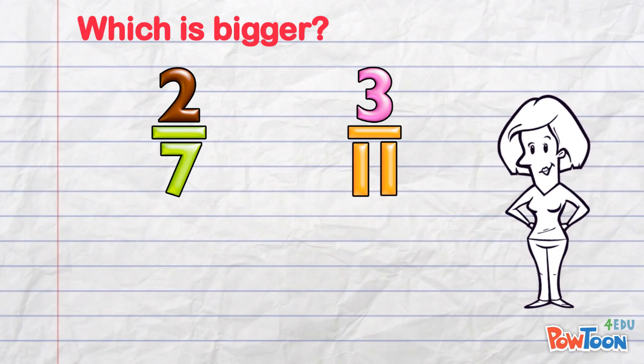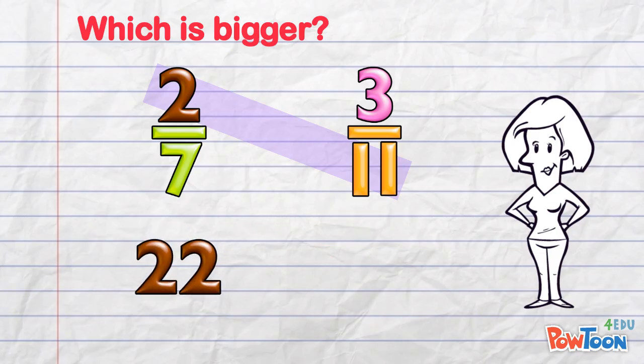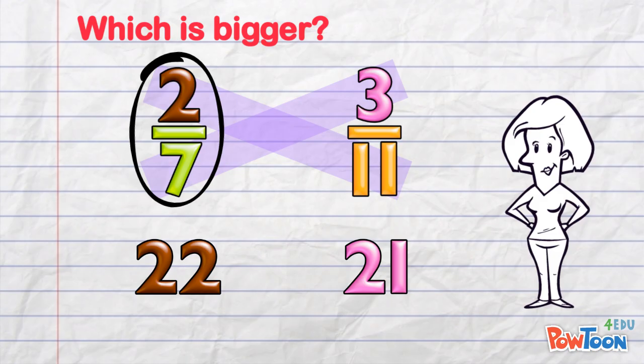And I'm not bothering with that. But for the numerators, 2 times 11, 22. And 3 times 7, 21. We can see that 2 sevenths is greater than 3 elevenths.